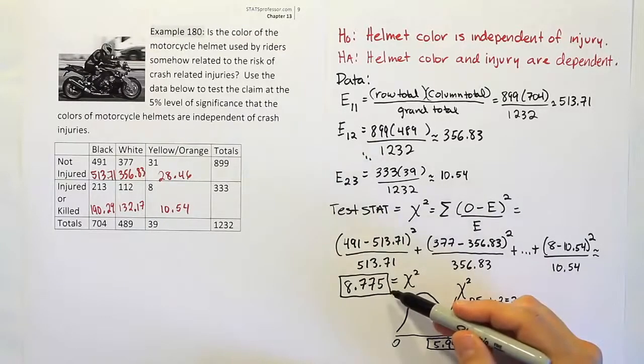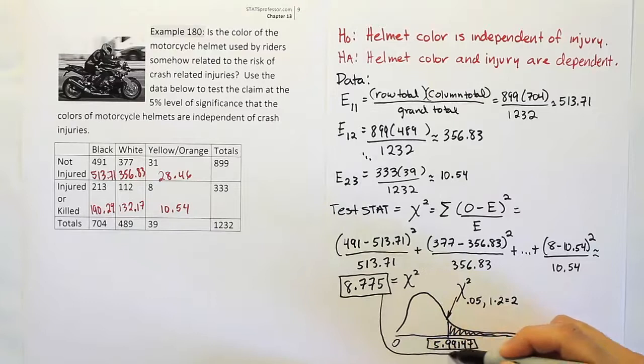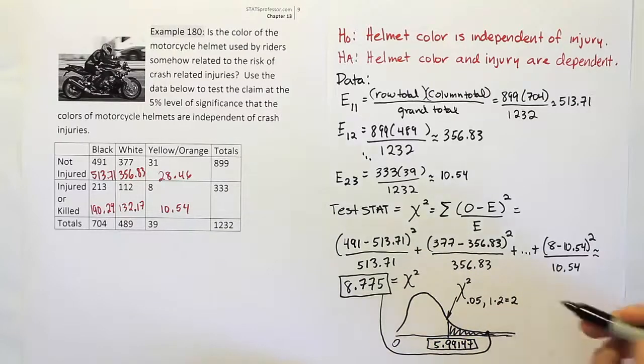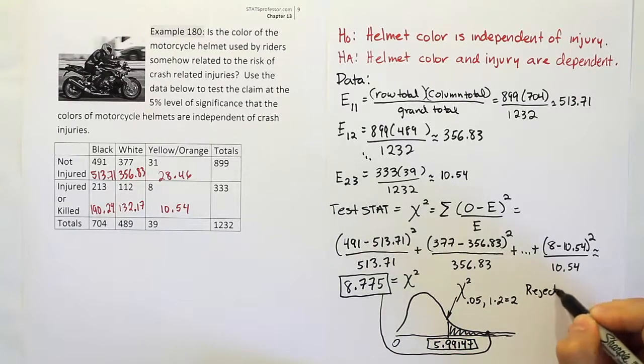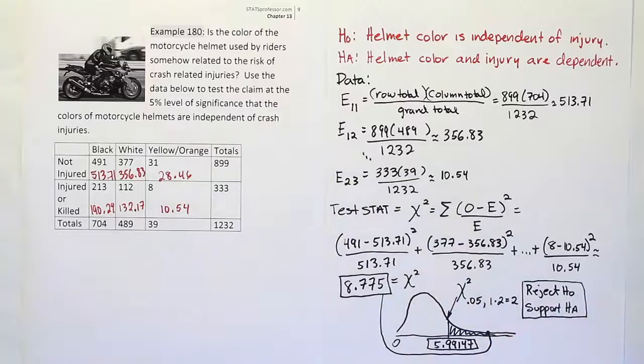When we compare that against our chi-squared test stat, you see that our test stat clearly lands in the rejection region. So we should reject the null hypothesis. We reject the idea of independence and support the idea that these two things are dependent. We're saying that the color of the helmet is related to your risk of injury when riding a motorcycle. If we wanted to speculate on what that relationship is, it's probably due to the fact that bright colored helmets are easier to see, and the motorcycle rider is therefore more visible and less likely to be hit by a car or something like that. That's basically the idea of the problem.